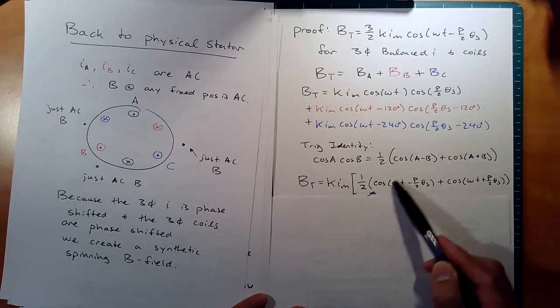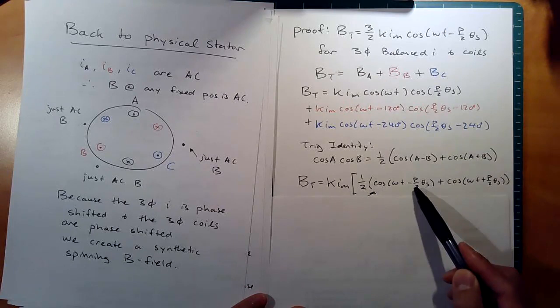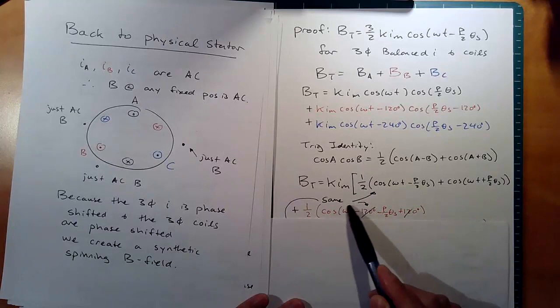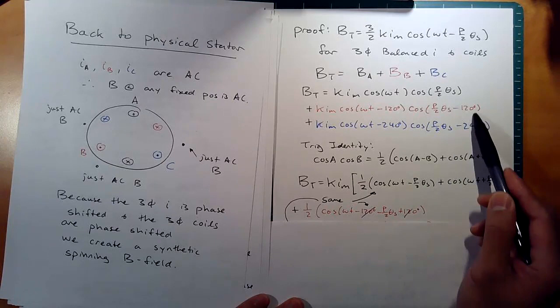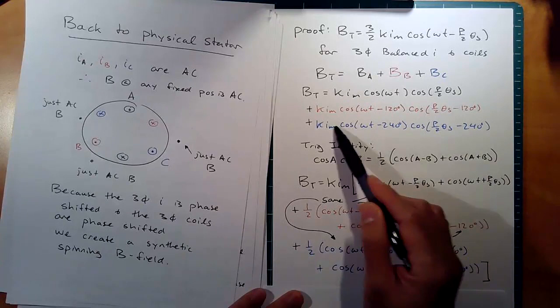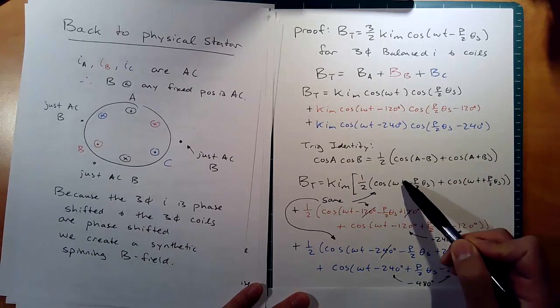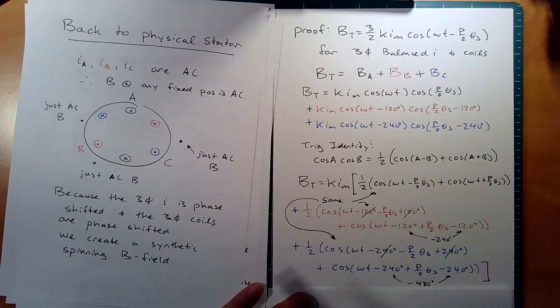Pulling out K and I_m, for phase A we get one half * cos(ωt - p/2 * θ_s) plus cos(ωt + p/2 * θ_s). For phase B, the new arguments are (ωt - 120°) and (p/2 * θ_s - 120°), giving one half * cos(ωt - p/2 * θ_s) — the minus 120s cancel — plus cos(ωt + p/2 * θ_s - 240°). For phase C similarly, with minus 240 degree offsets. Looking closely, the first terms from all three phases are identical because the ±120° offsets cancel, so those three terms combine to three times cos(ωt - p/2 * θ_s).